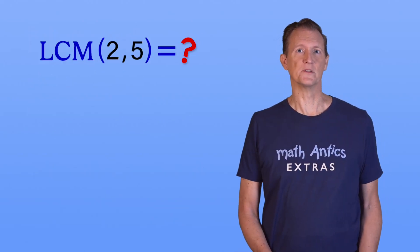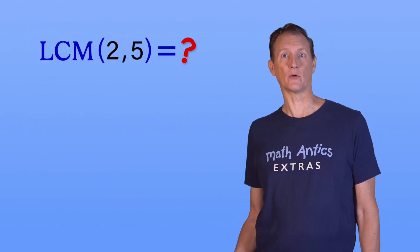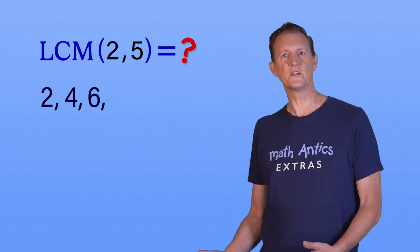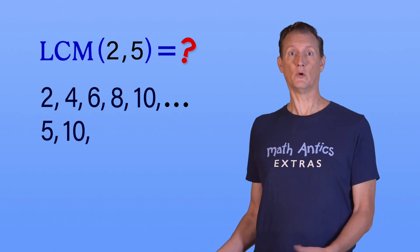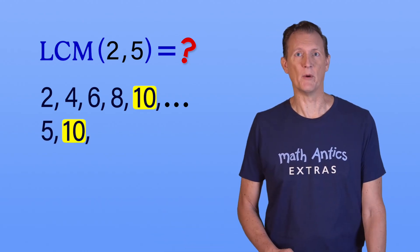It's not hard at all to find the LCM of 2 and 5 by listing their multiples, because those are so easy to skip count or calculate. Skip counting by 2 gives you 2, 4, 6, 8, 10, and skip counting by 5 gives you 5, 10... Well, see? We already found the least common multiple is 10.